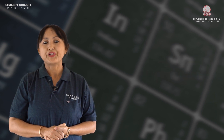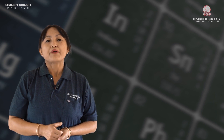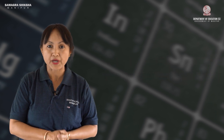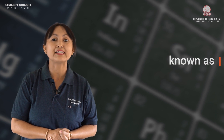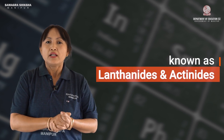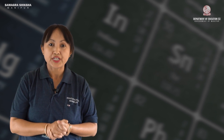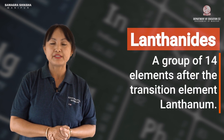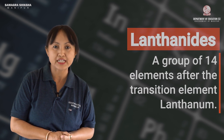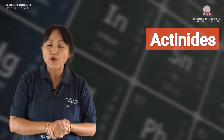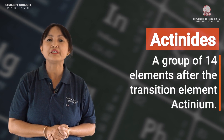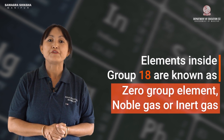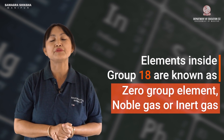At the bottom of the table, there are two series of elements: the lanthanide series and the actinide series. The lanthanide series is a group of 14 elements placed after the transition element lanthanum, and the actinide series is a group of 14 elements placed after the transition element actinium.